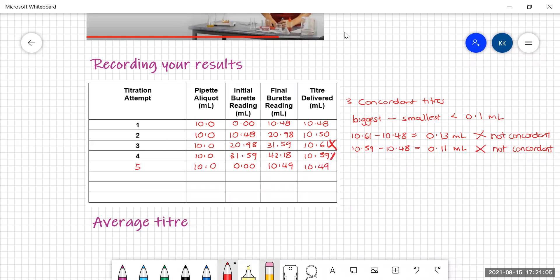That's looking better. So I'm going to get rid of, I don't need that one. Let's have a look. So 10.50 is my biggest, 10.48 is my smallest, and that is equal to 0.02. So rejoicing. Yes. Finally, I have concordance.